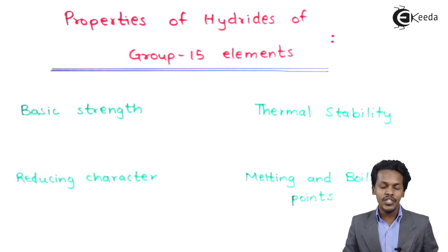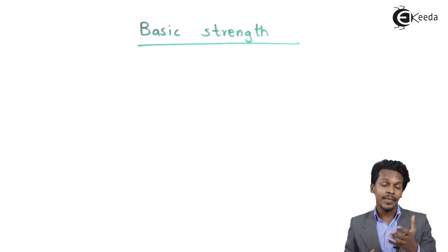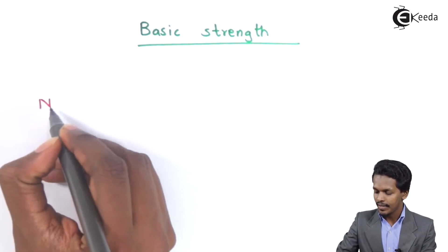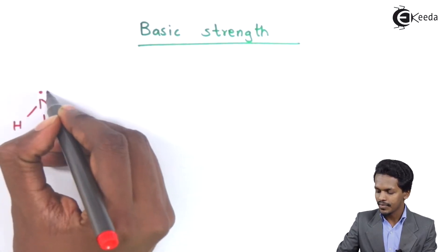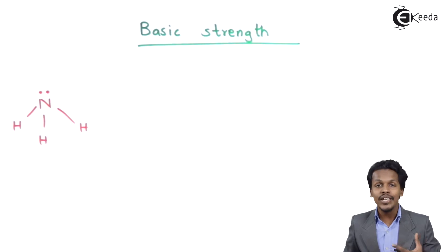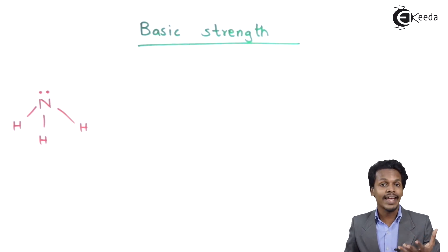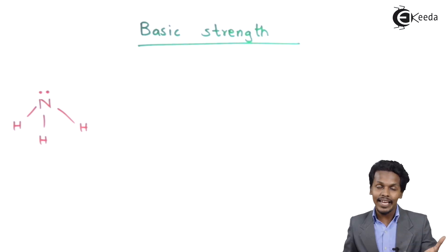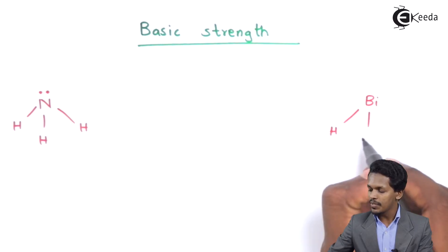Let me talk about the first point, and that is basic strength. Talking about the hydride of the group 15 element — considering the hydride belonging to the first element of the group 15, that is NH3. If we talk about NH3, it consists of a lone pair of electrons on the nitrogen, which has a capacity to give this electron to an electron-deficient species. So that makes ammonia act like a base, or a Lewis base. Therefore ammonia is a Lewis base.